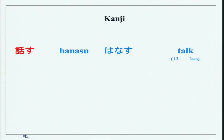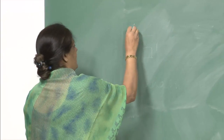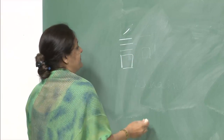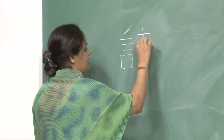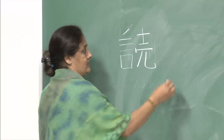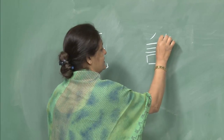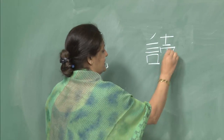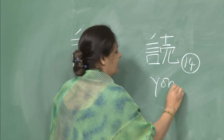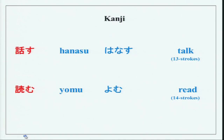Next kanji: yomu — to read. One character is similar to what we have seen before. It is a fourteen-stroke character: 1, 2, 3, 4, 5, 6, 7, 8, 9, 10, 11, 12, 13, 14 — fourteen strokes meaning yomu, to read. You can draw it at home, write it properly as given, and practice.